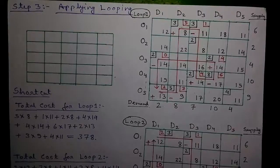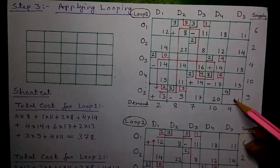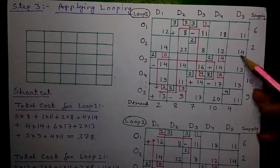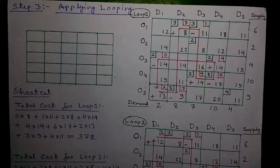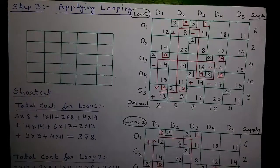Hello everyone, I am Sujoy and this is part 4 of the video where I am telling you how to solve a 5x5 transportation problem by the Modi method or the modified distribution method. In the previous 3 videos I told you how to check the question for the IBFS or Initial Basic Feasible Solution, how to check for degeneracy, how to calculate the opportunity cost, how to do the optimality test, how to check whether the present solution is optimal or not, and how to draw the loops and all the rules related to looping.